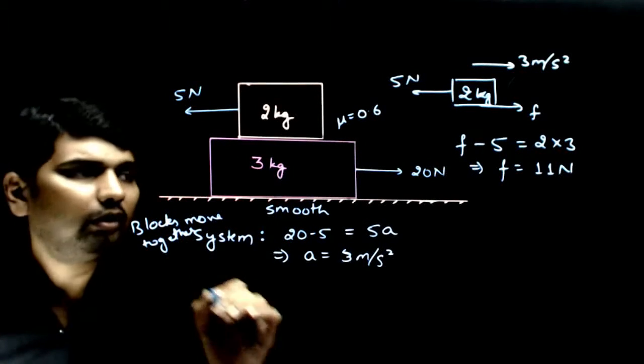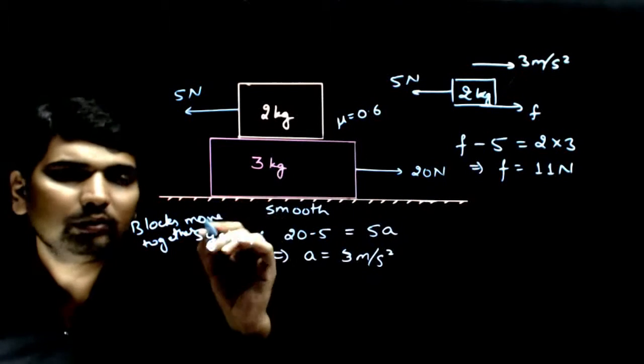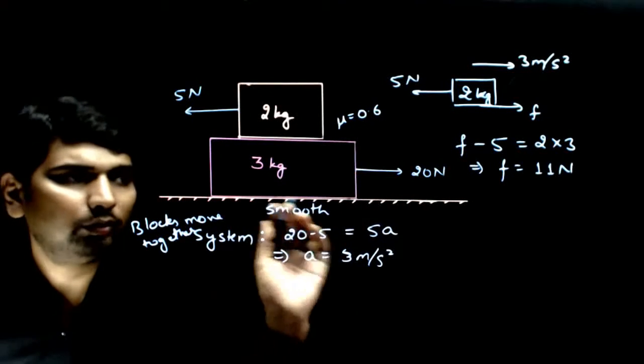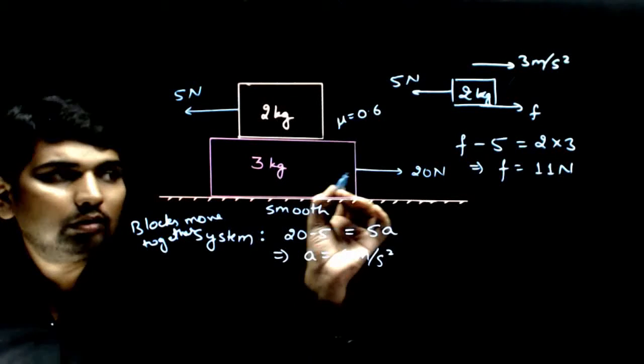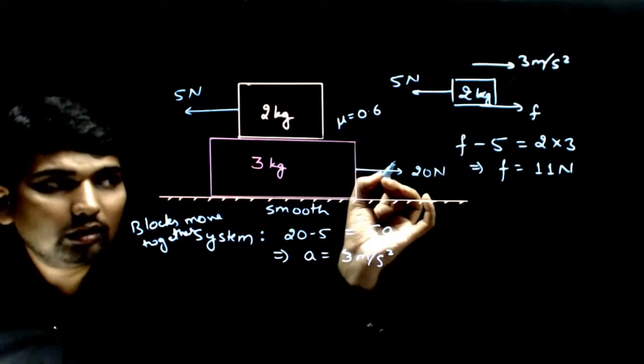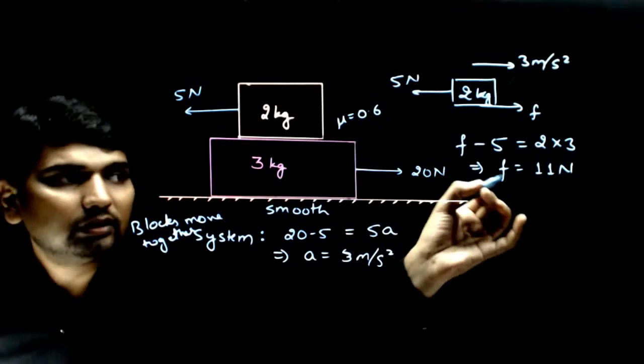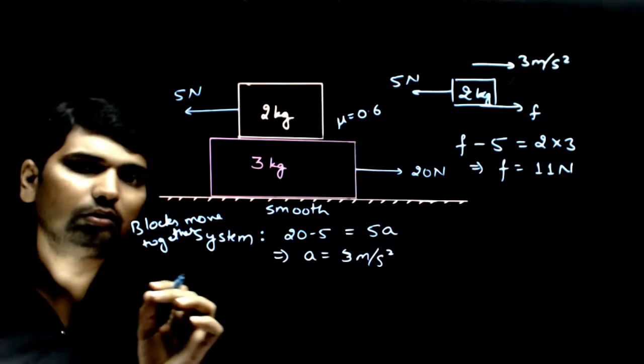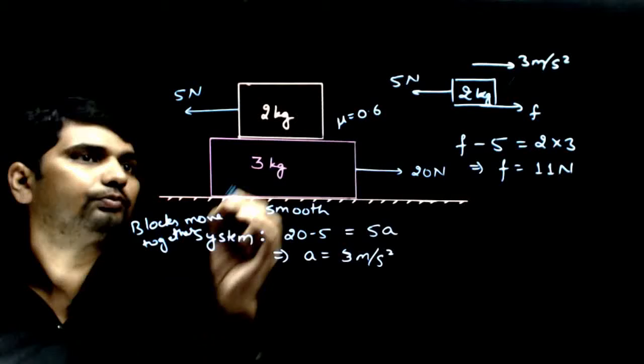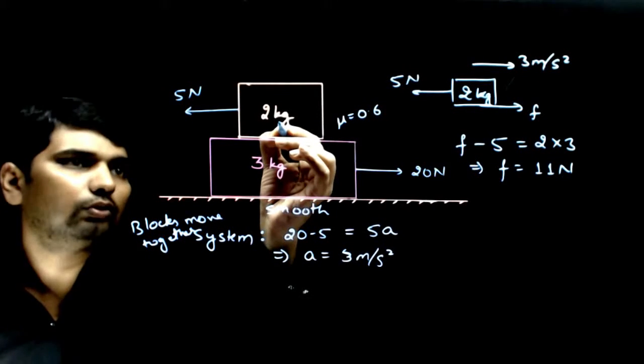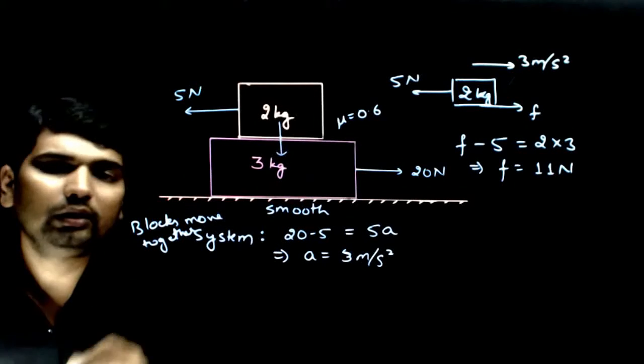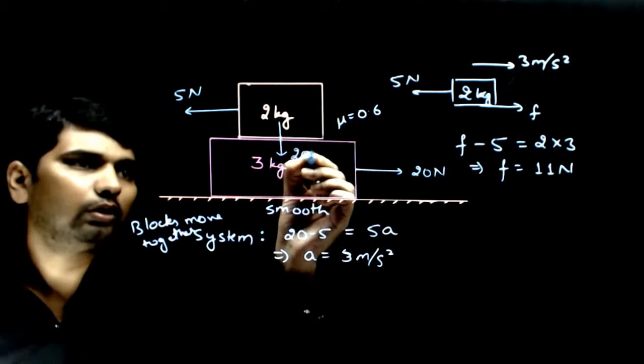But for right now, we have assumed that both these blocks are moving together, and in that case friction is 11 Newton. But we also have to check whether this friction is below the limiting friction or not. On this 2 kg block, if I find the normal force, the vertically downward force is 2g, that is 20 Newton.